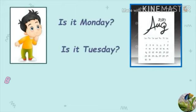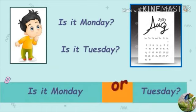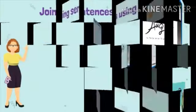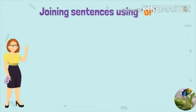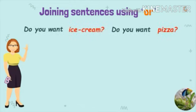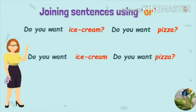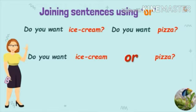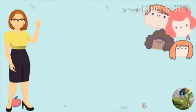Third example: Is it Monday? Is it Tuesday? Our answer would be: Is it Monday or Tuesday? Children, when we join sentences using OR, we have to remember the same point as when we join sentences using AND. For example: 'Do you want ice cream? Do you want pizza?' — the words 'Do you want' are repeated twice. When we combine these two sentences, the repeated part disappears, and in its place we use the conjunction OR.